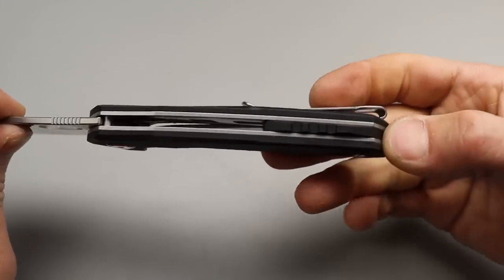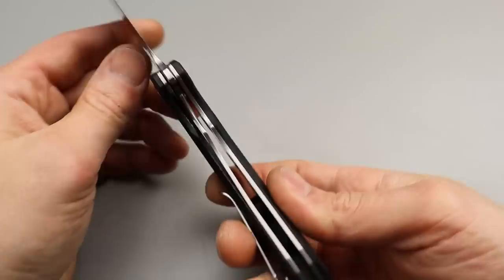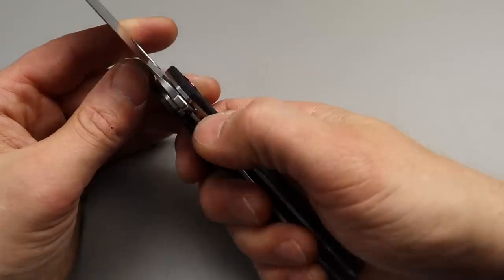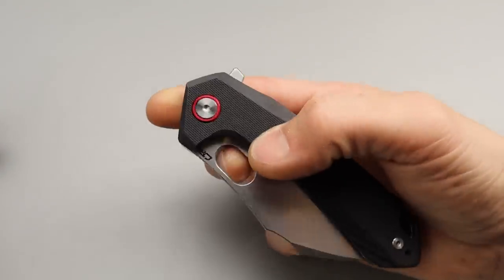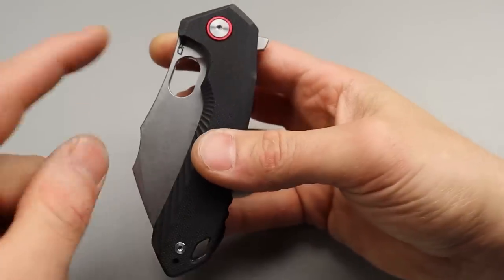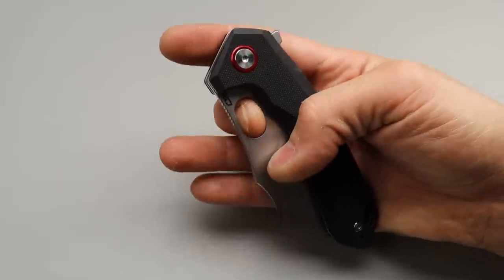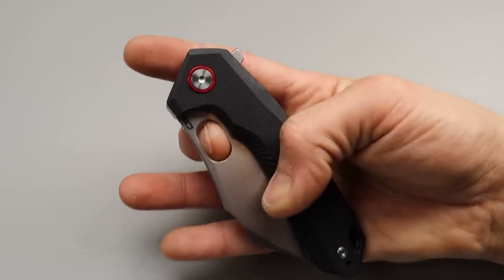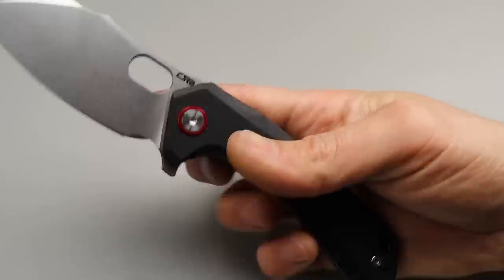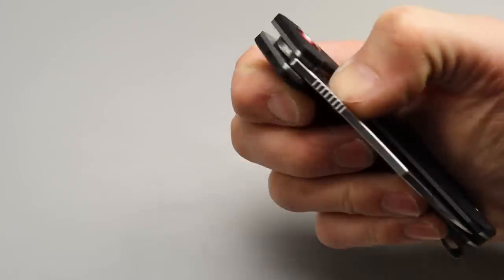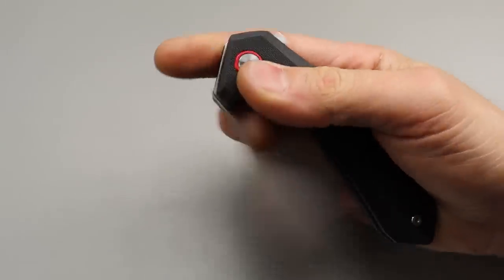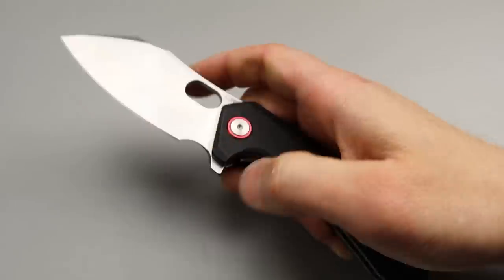We have G10 scales with the G10 backspacer steel liners. Nice lock up and it is very smooth on the drop. The hole deployment has a nice big hole. It's almost too big, you can almost fit your fingers through it, but it's placed in such a good spot. It is very fidgety. Whether you thumb flick or reverse flick, it is very easy.